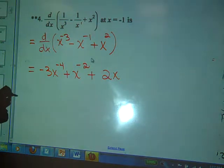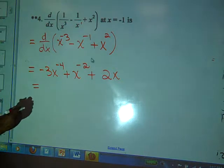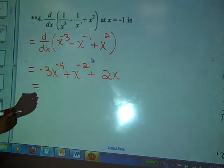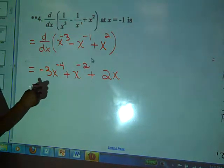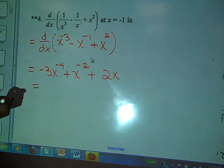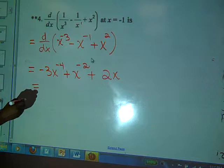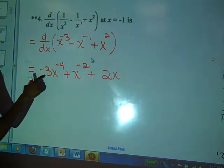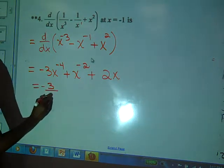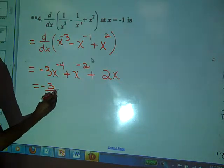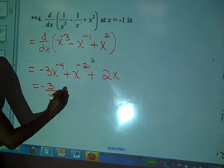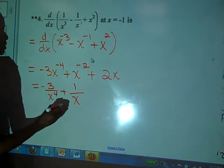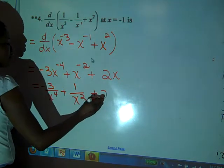Now, can we rewrite that without negative exponents? Yes. So what do we get when we rewrite this without negative exponents? We've got to flip it. So what is it going to look like? You're only flipping the variables. We already did that part. Negative 3 over X to the 4th power. To the 4th power. Plus 1 over X to the square. Square. Very good. Plus 2X.